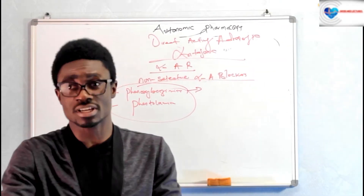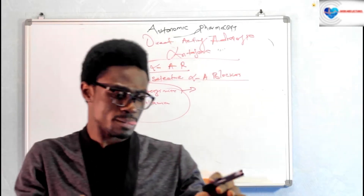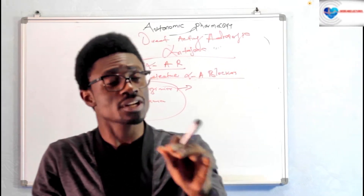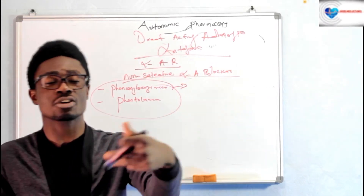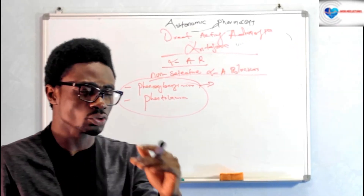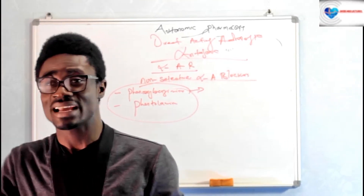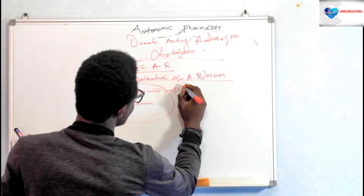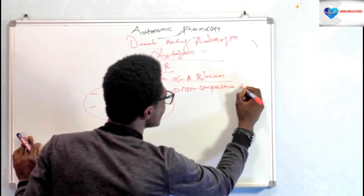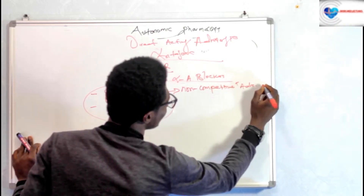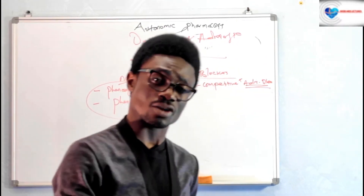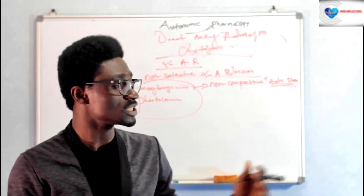What is the difference between phenoxybenzamine and phentolamine? Phenoxybenzamine is an irreversible alpha adrenergic blocker, meaning that when it binds to those alpha adrenergic receptors, it does not dissociate from the receptor — even in the presence of high concentrations of norepinephrine it cannot dissociate. Because it cannot be displaced, this makes it a non-competitive alpha adrenergic blocker.